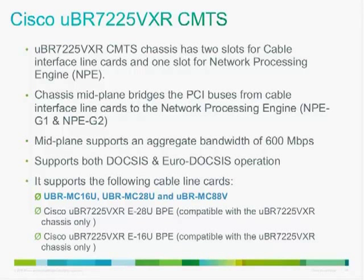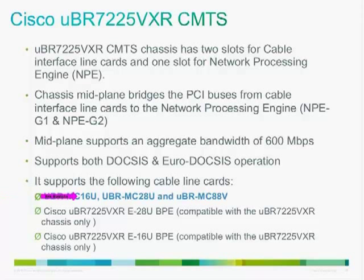Regarding line card naming convention: for Cisco CMTS line cards, the first number denotes available upstreams and the second denotes available downstreams. So 16U is one upstream and six downstreams; 28U is two upstreams and eight downstreams; 88V is eight upstreams and eight downstreams. Processing engines are another important component. For the 7225, the MPE G1 and G2 are available. The processor manages all routing protocol updates, tables, caches, interface and environmental stats, SNMP, accounting, and switching of data traffic.